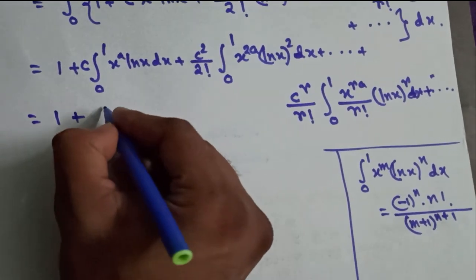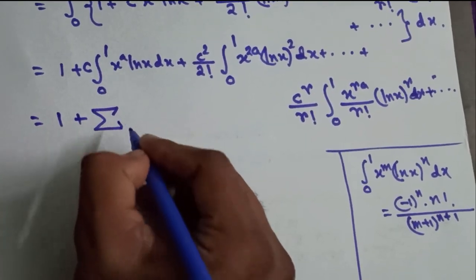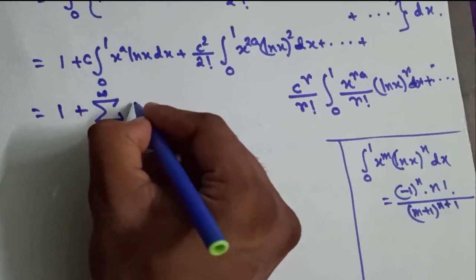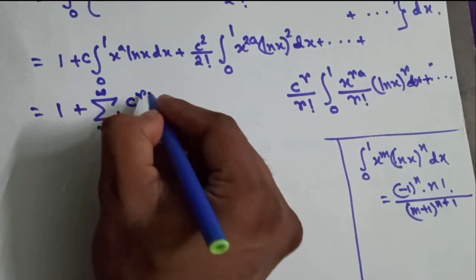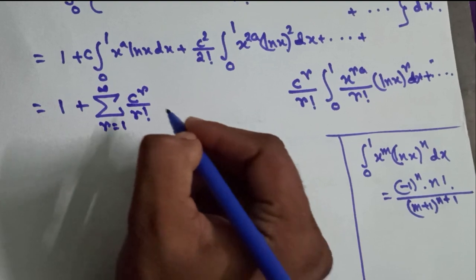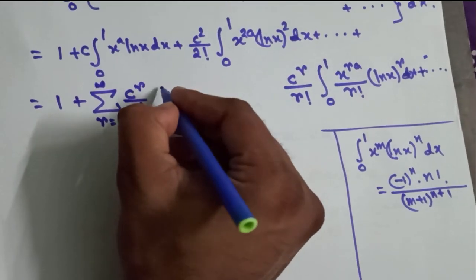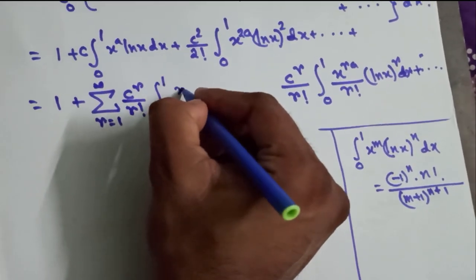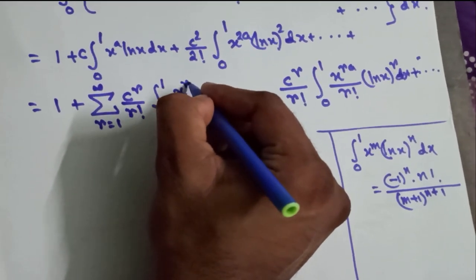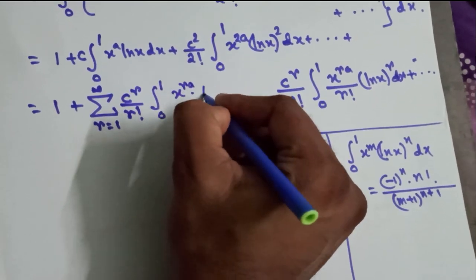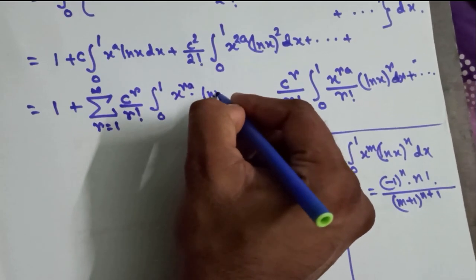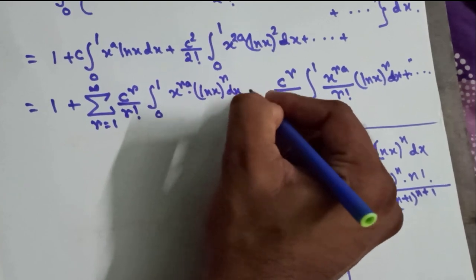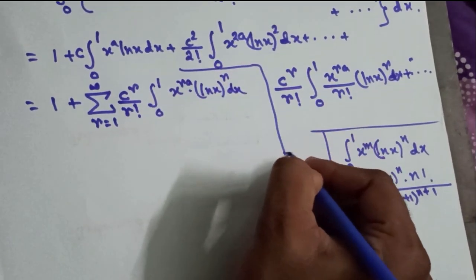We can now write all those integrals in a generalized summation form: the sum from r = 1 to infinity of c^r / r! times the integral from 0 to 1 of x^(ra) · (ln x)^r dx.